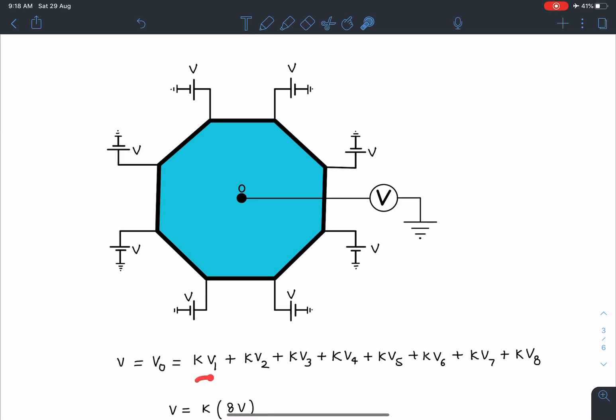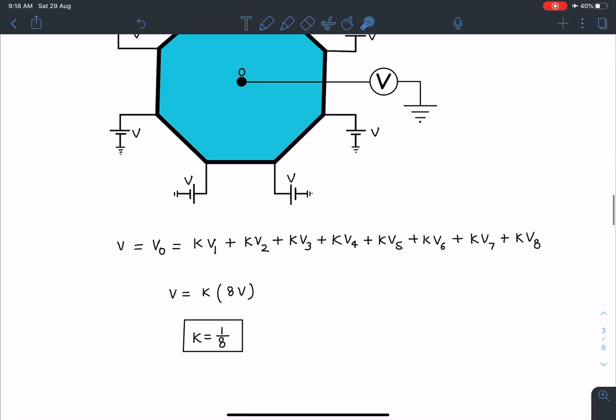So now I can write KV1 plus KV2 plus KV3 up to KV8 for all the vertices. I am using that number times potential of that point and that contribution is going to give me this potential at O. But we have discussed that potential at the center O is nothing but V itself. So this V0 is V and individual V1, V2, V3 values are also V only here. So if I take K common, V1 plus V2 plus V3, each one of them is going to be V because these are the batteries I am connecting here. I am going to get this number as 1 by 8, or you can say the contribution in the potential by this number which depends on the geometry is going to be 1 by 8 for all the vertices due to symmetry. Now let's move to the original problem.